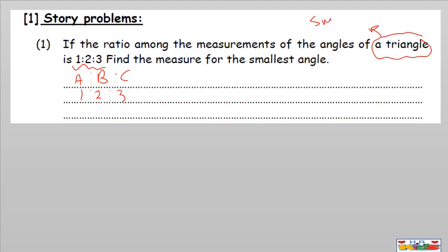Since this is a triangle, the sum of all angles equals 180. So the first step: the sum of all angles in a triangle is 180. Under the ratio numbers, we put 180. Where did 180 come from? From your prior knowledge — information you already know.